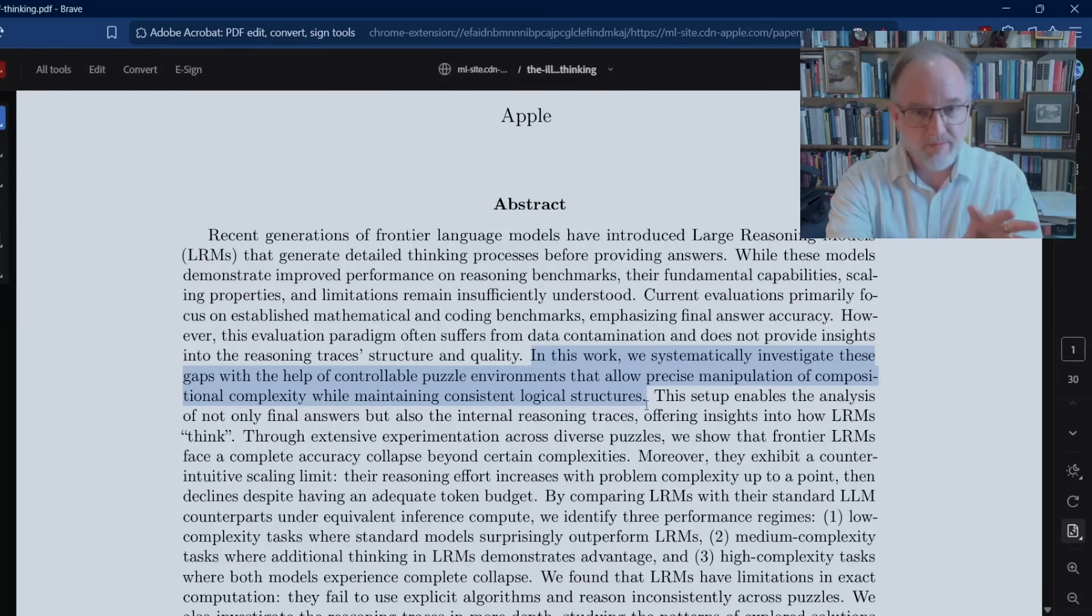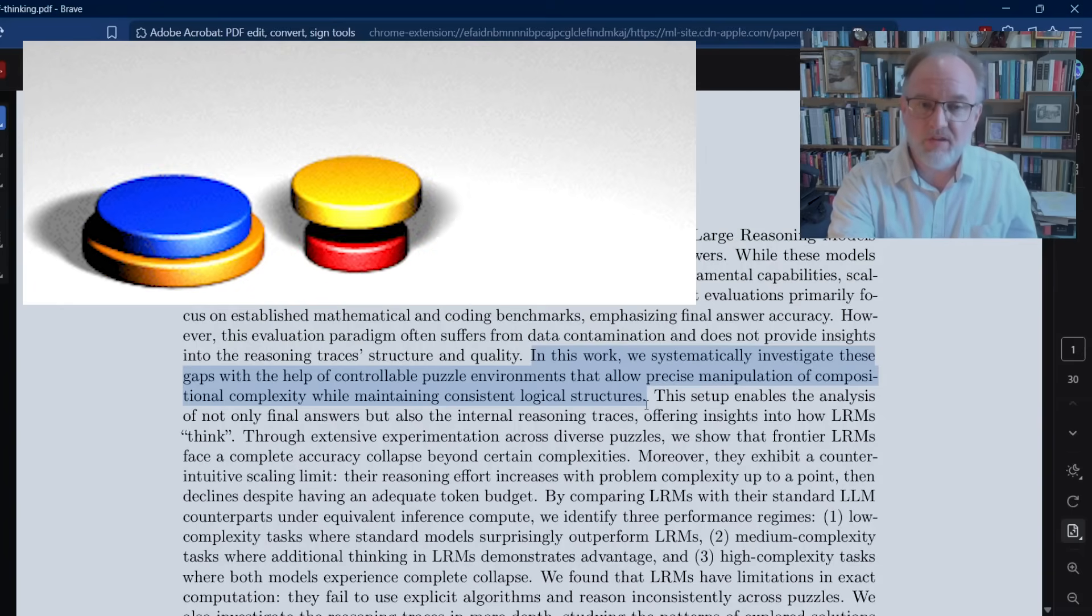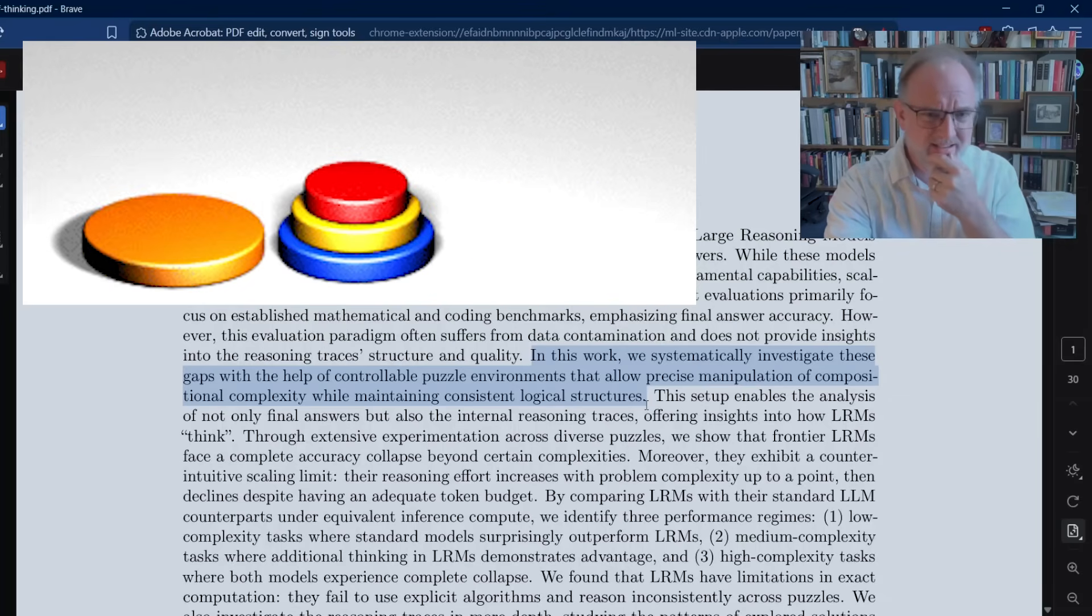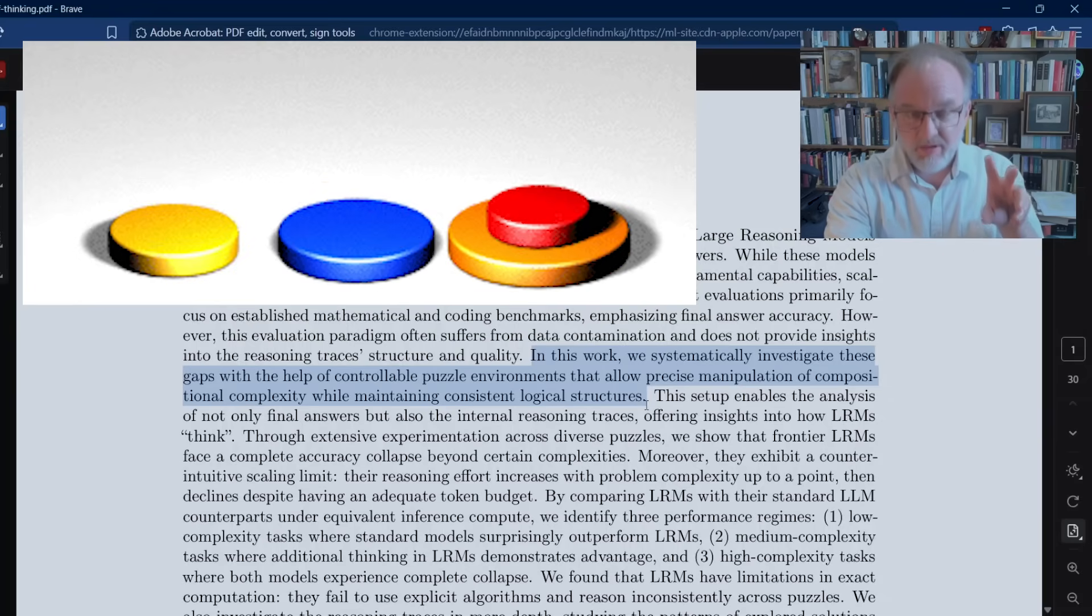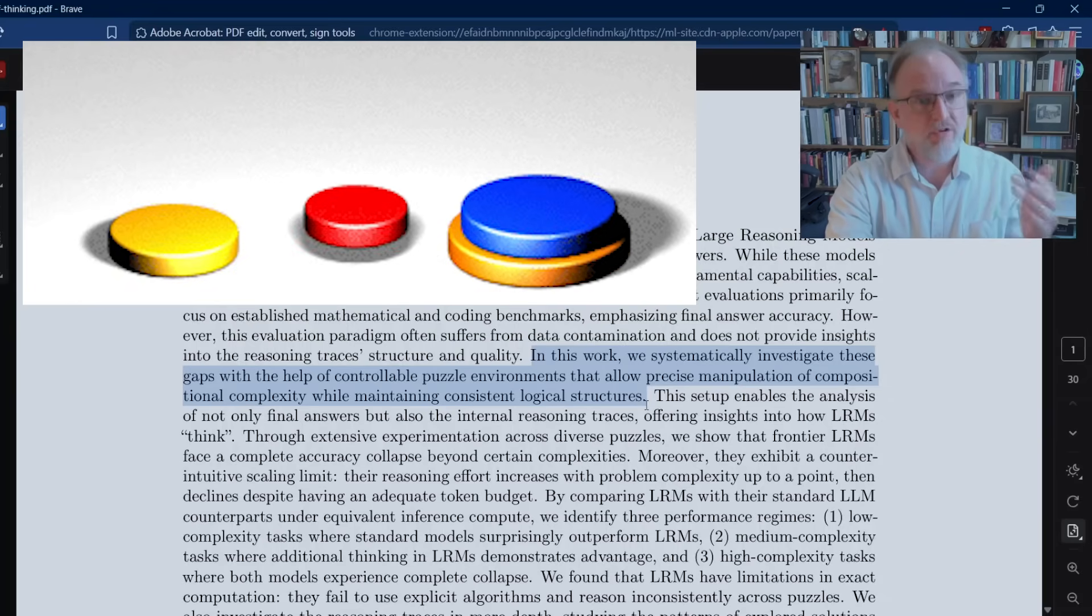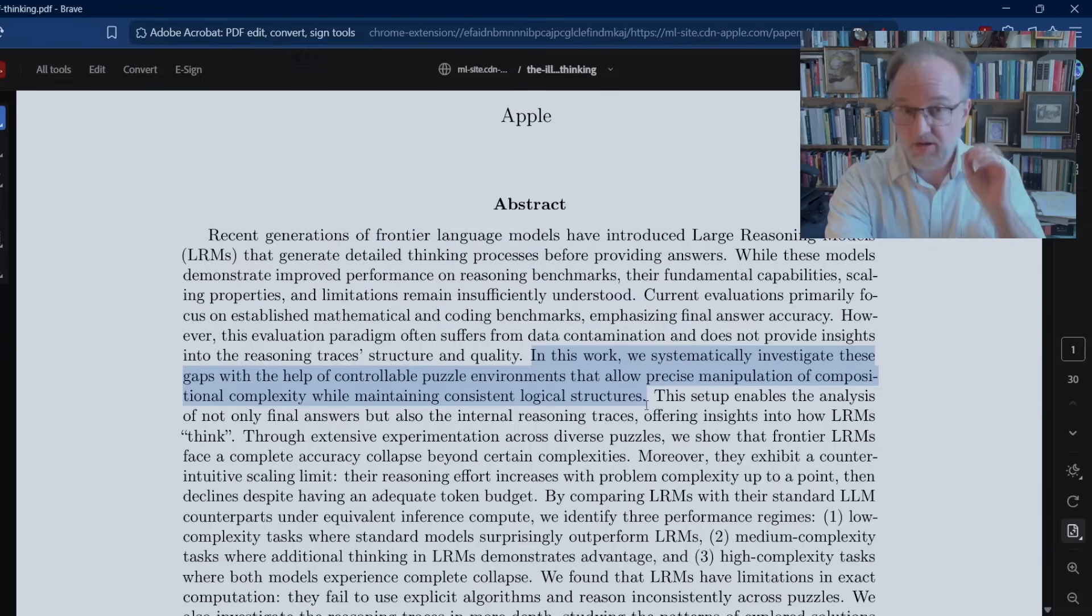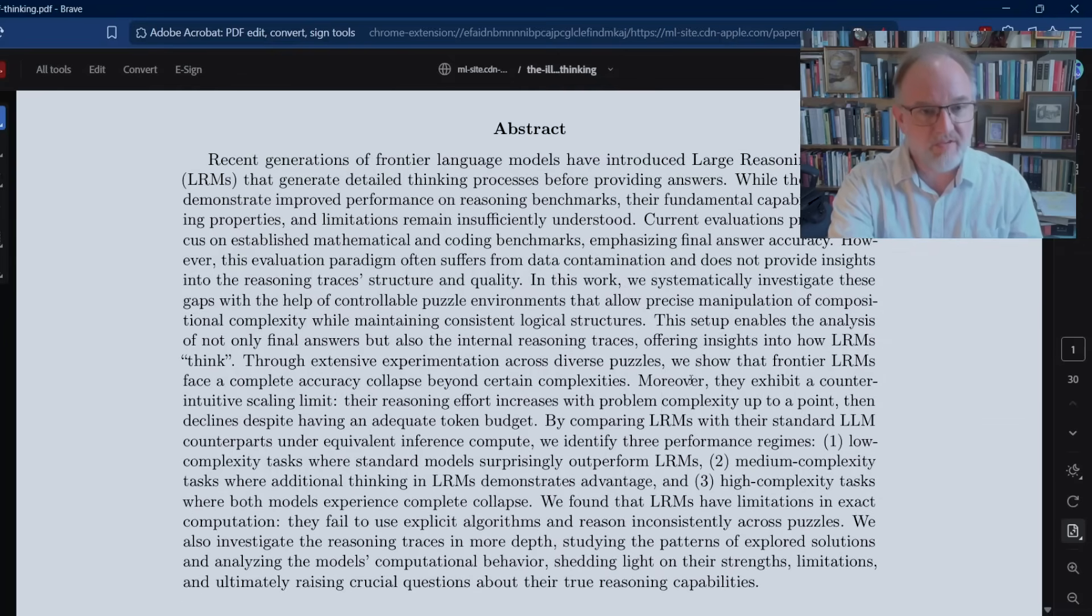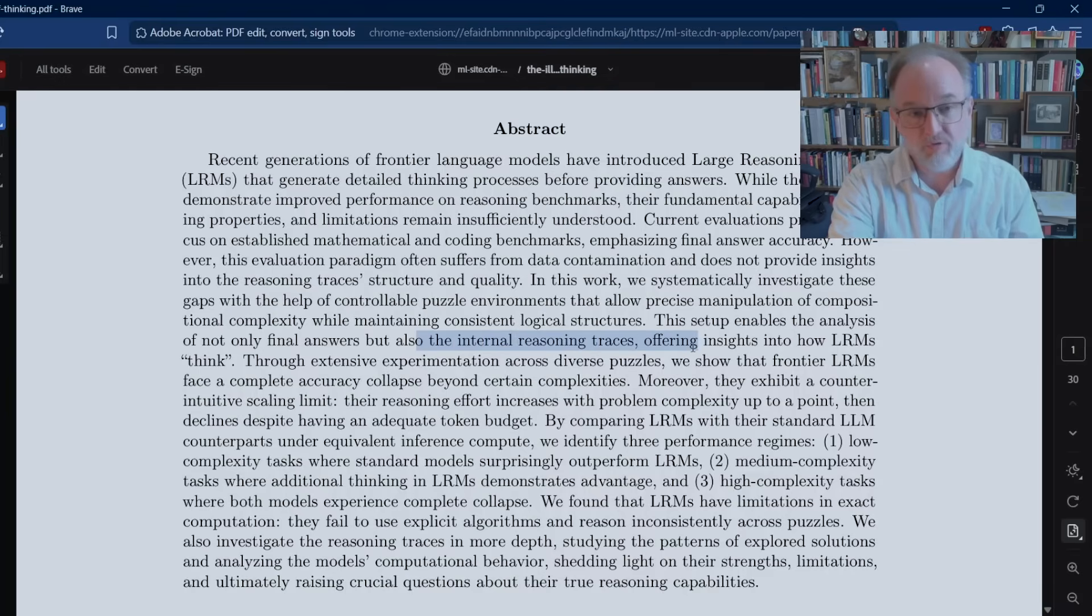They switched this to giving it a set of problems that are scalable. So the Tower of Hanoi is one of these. In the Tower of Hanoi, you have the disks which you move between three pegs. You've probably seen this even in restaurants or small children's toys. The idea is that by increasing the number of disks that you start out with, you can increase the complexity of the puzzle, but the underlying logic of the puzzle, including the algorithm that needs to be applied in order to solve it, remains fundamentally the same. It also allows them to check the internal reasoning traces. What are the intermediate states of a large reasoning model as it goes through trying to find the correct answer? How does it arrive at the conclusions it arrives at?